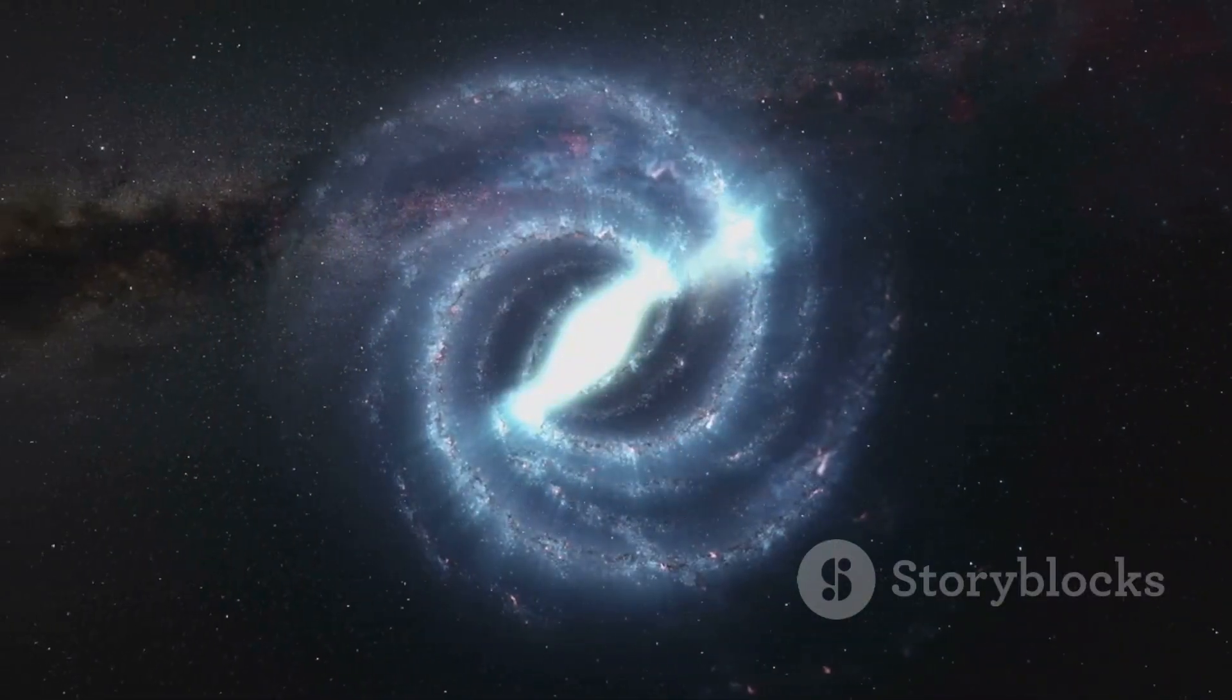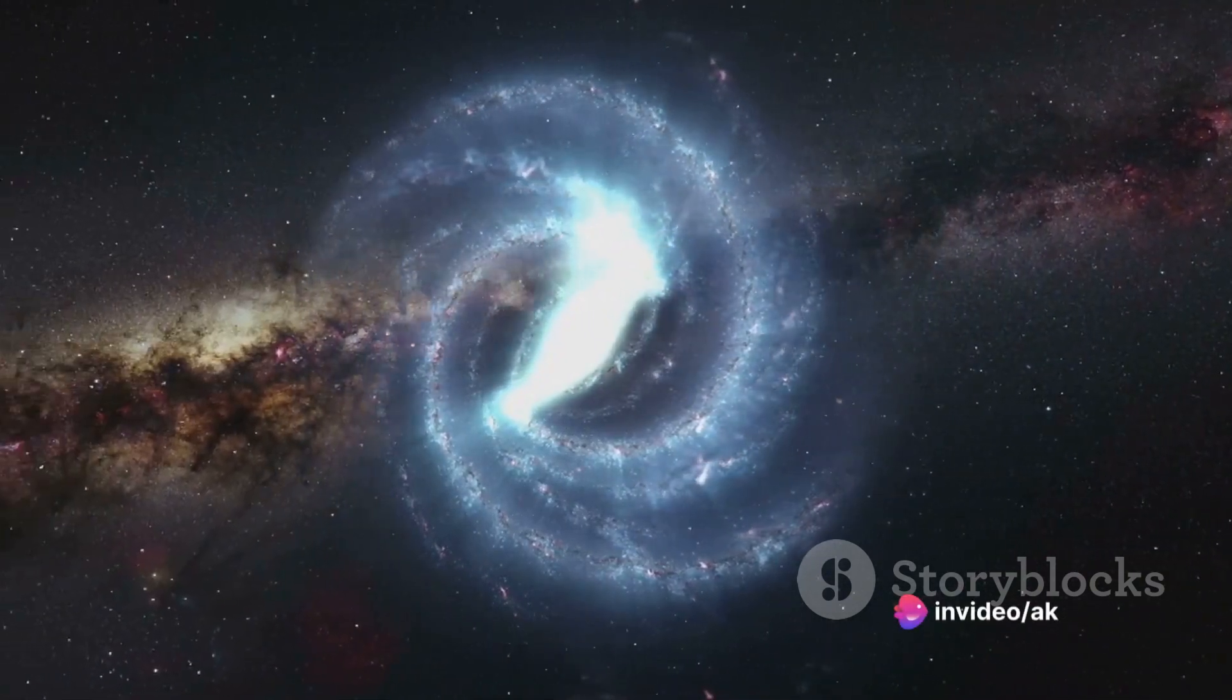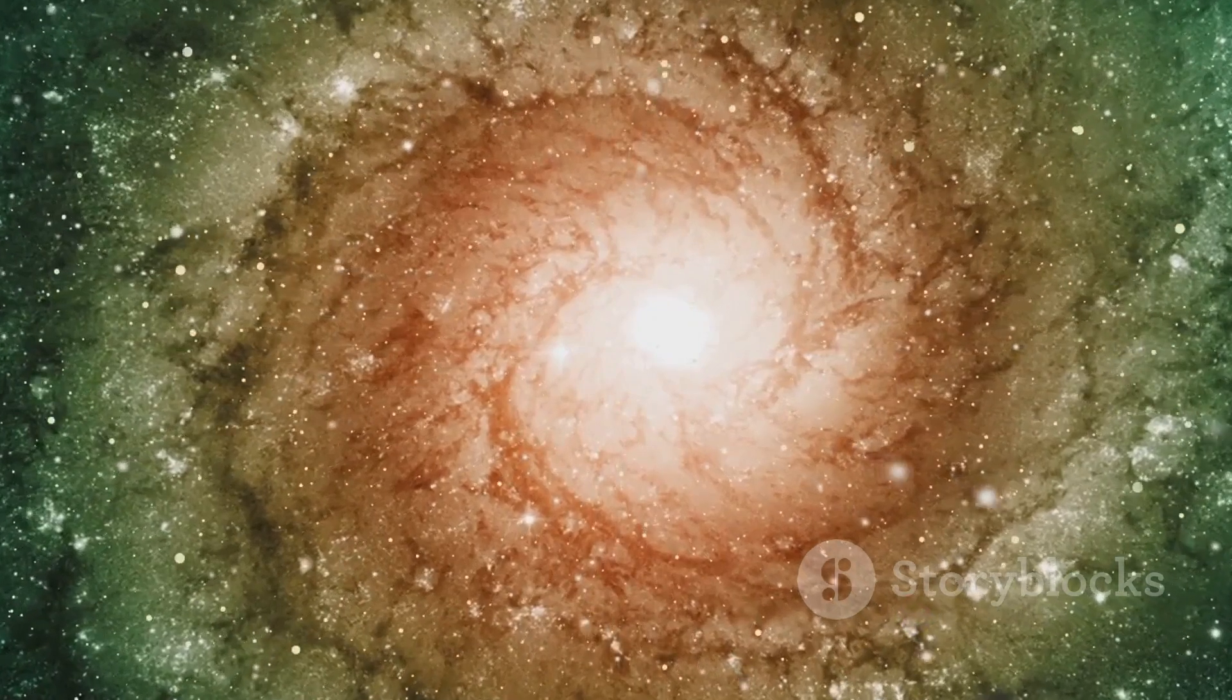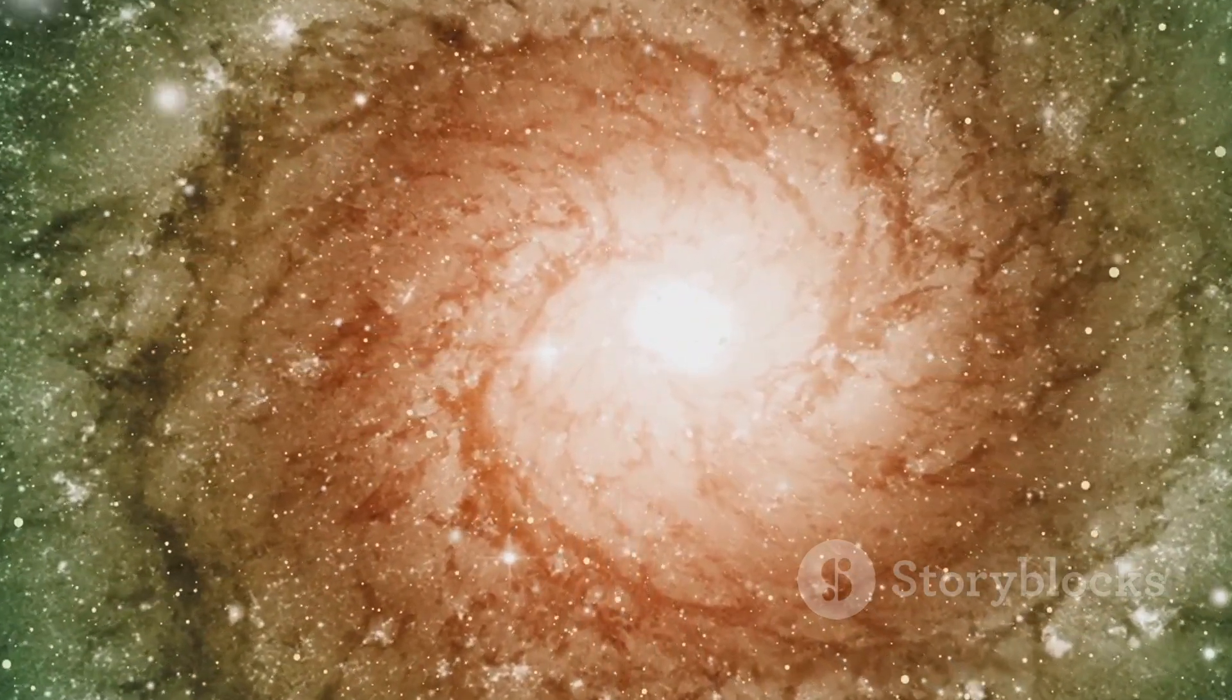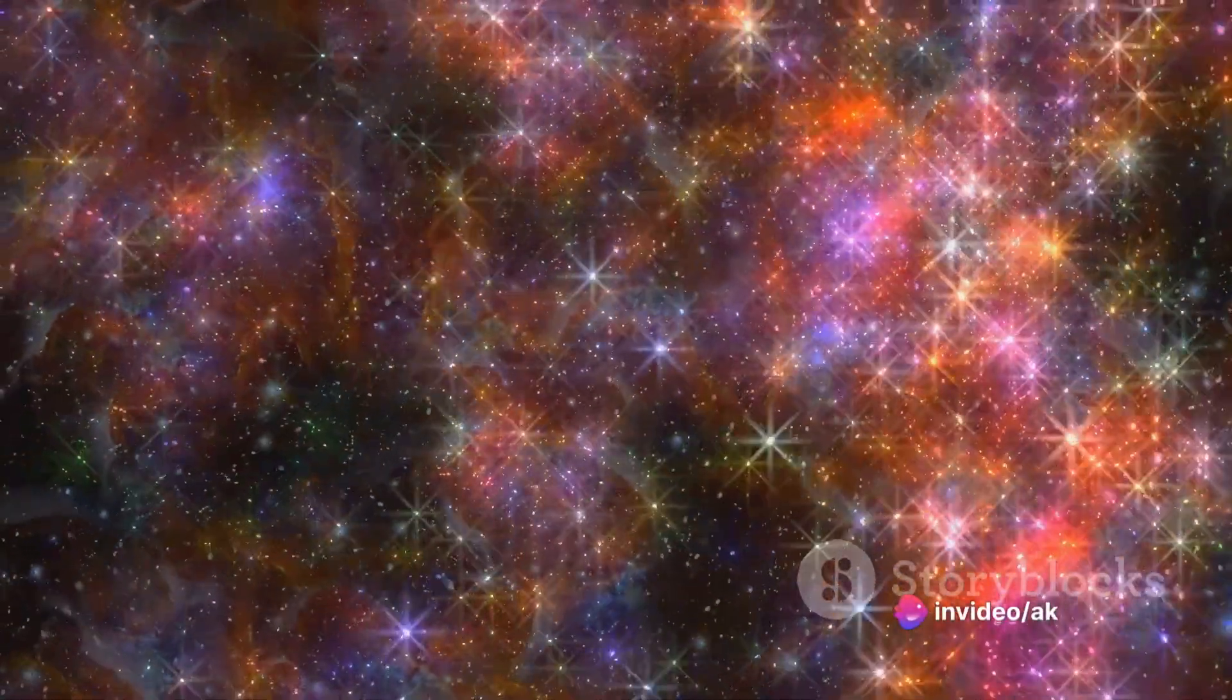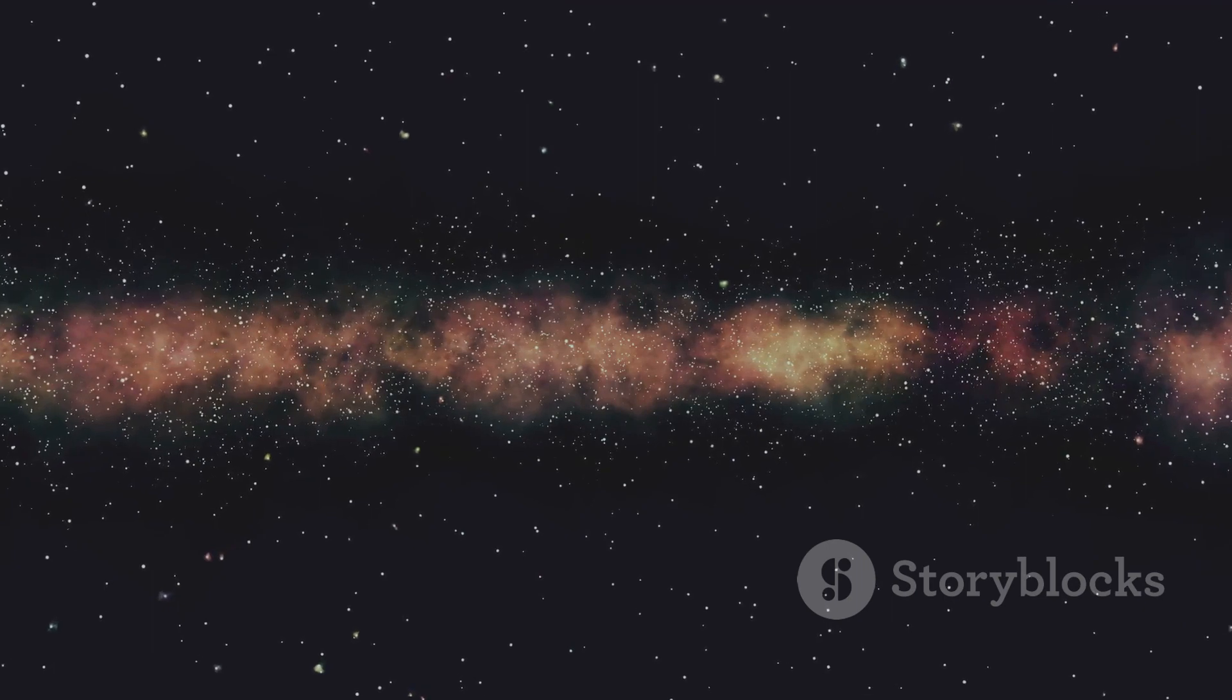Over these billions of years, the two galaxies will inch closer and closer together. As they approach, the gravitational forces at play will begin to warp and distort their shapes. Imagine two giant cosmic whirlpools, spiraling towards each other in the vast ocean of the universe. The stars within these galaxies will then start an intricate ballet, a celestial dance if you will. They'll be flung about changing their orbits and yet, despite the chaos, it's unlikely that any two stars will actually collide.